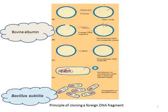This scheme shows the steps for producing albumin using Bacillus subtilis as a host cell for the recombinant molecule. The first step involves treating the vector with a restriction enzyme, which cuts the vector at the recognition site to obtain an open circle.